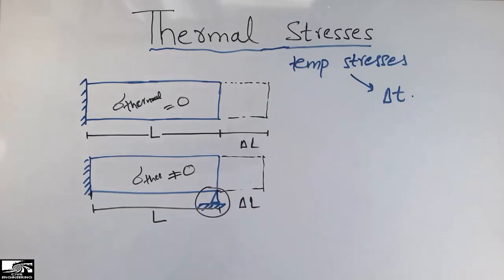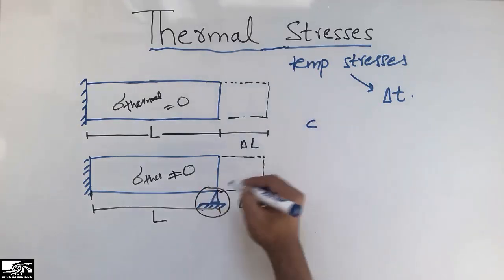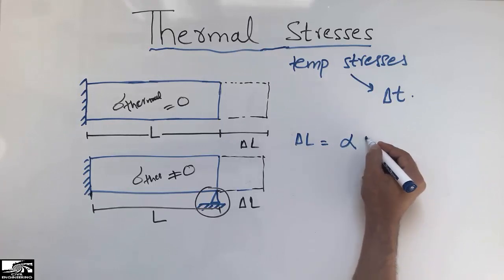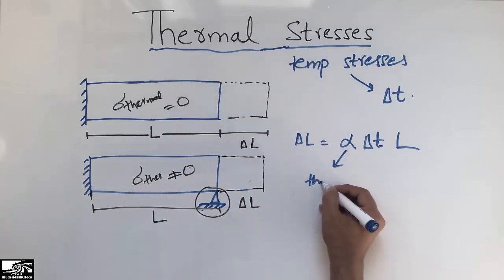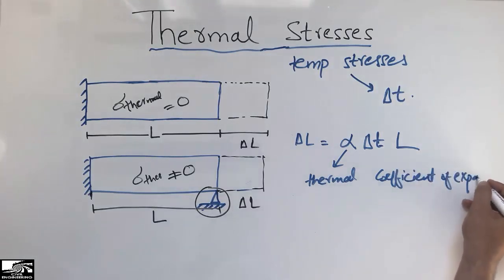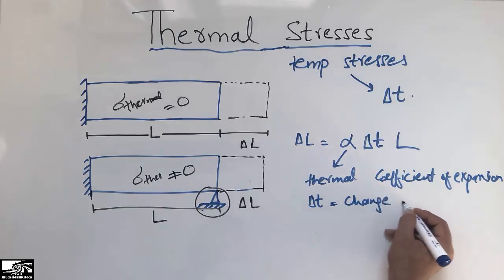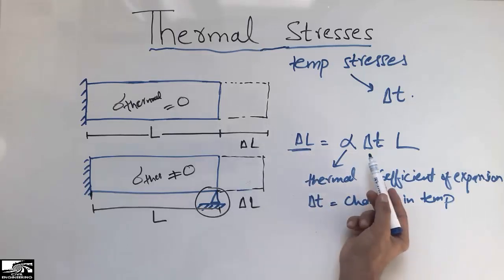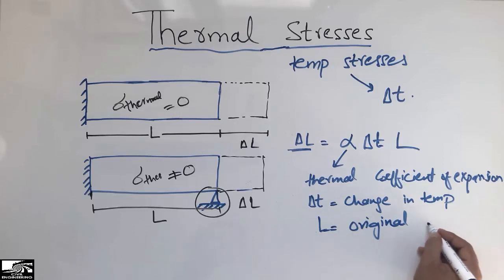Now I will derive the equation for thermal strain. The relation is given as: the change in length delta L is equal to alpha times delta T times L, where alpha is the thermal coefficient of expansion, delta T is the change in temperature, and L is the original length. The more the change in temperature, the more the change in length; the less the change in temperature, the less the change in length.